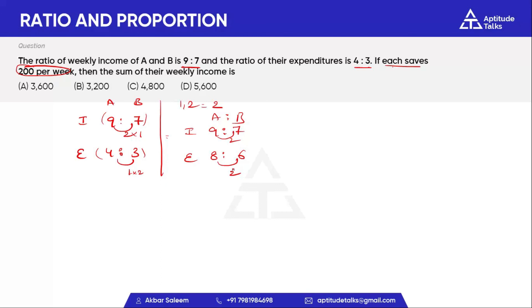In the ratio of saving, income is 9 rupees. Each part is 1 part, and the savings is 200 rupees per week.